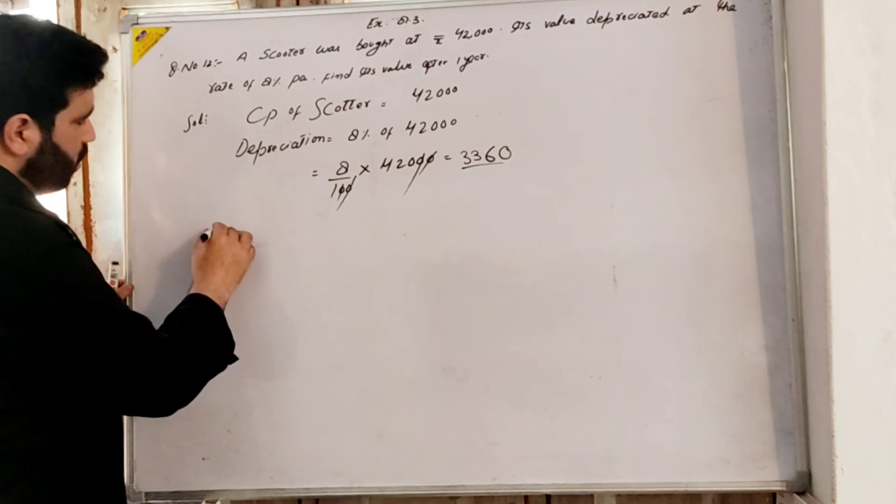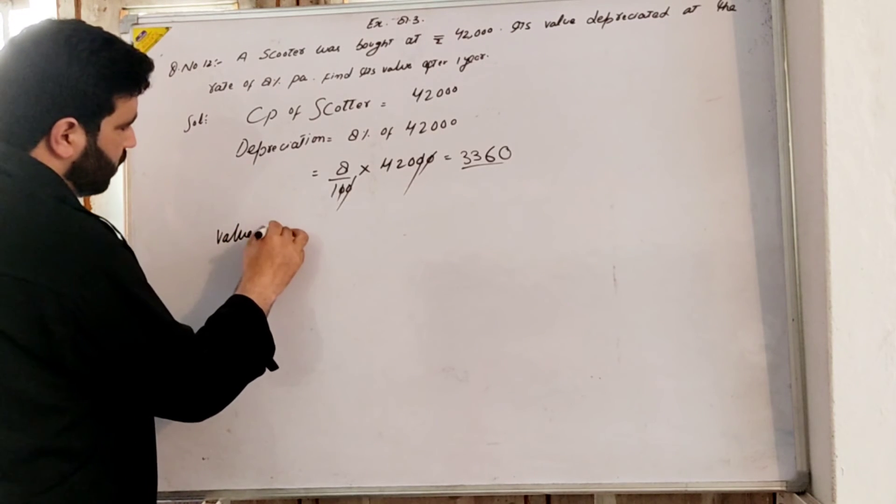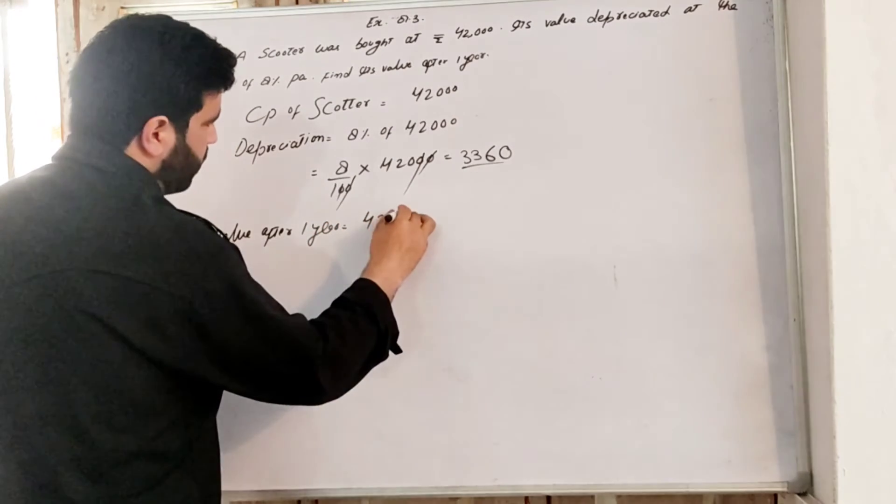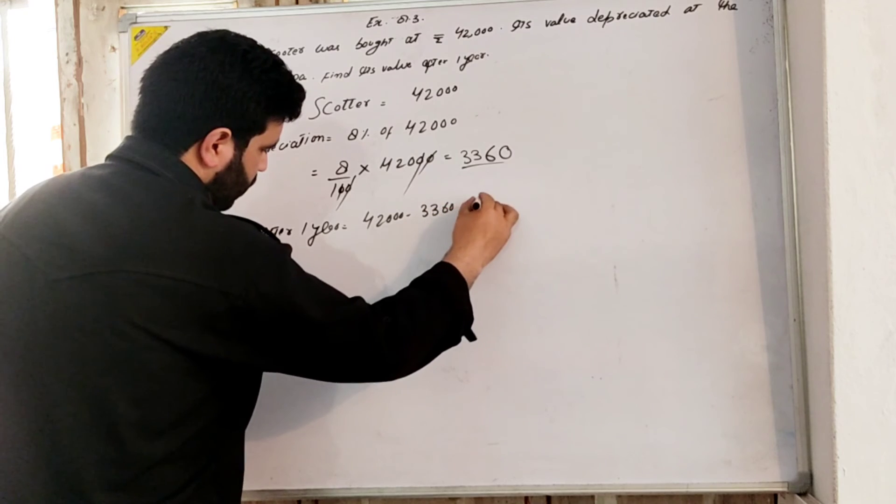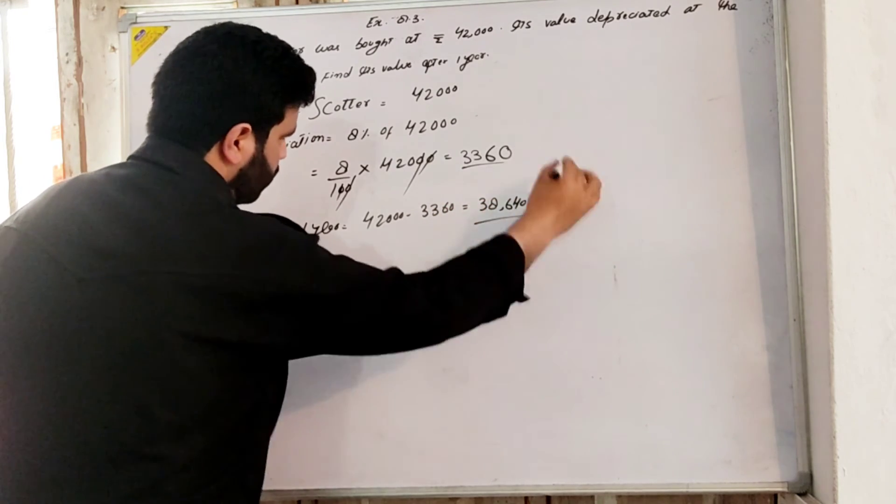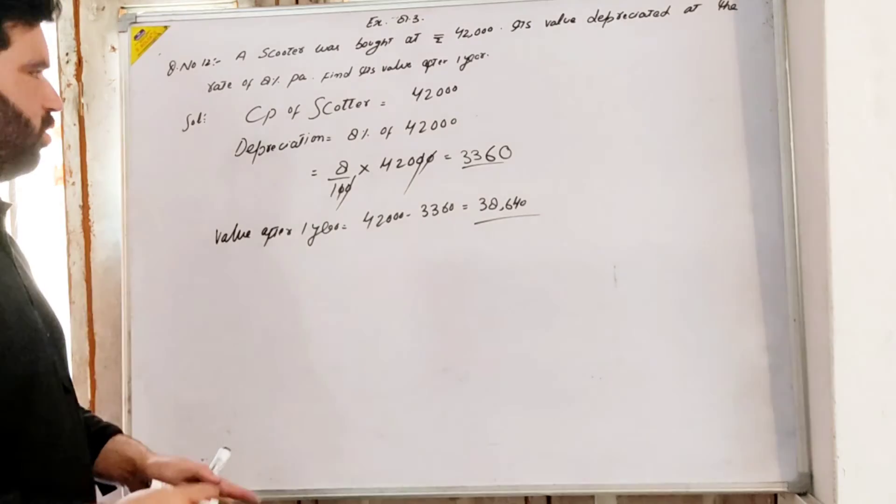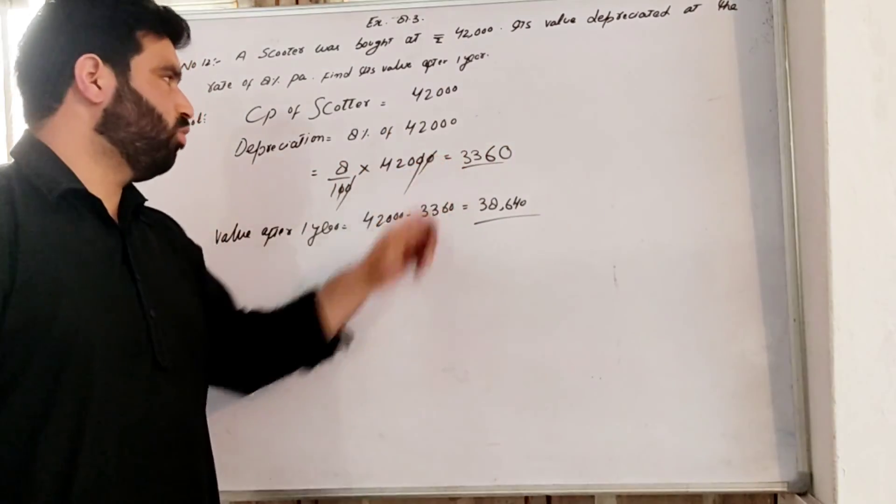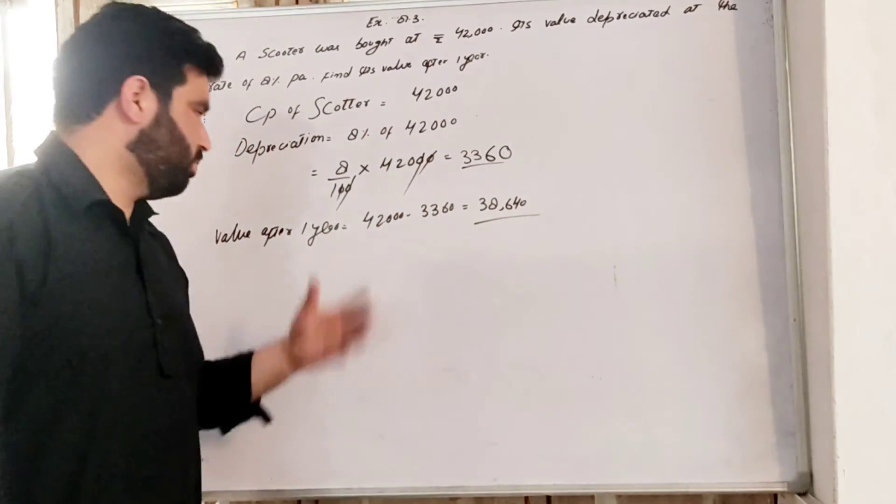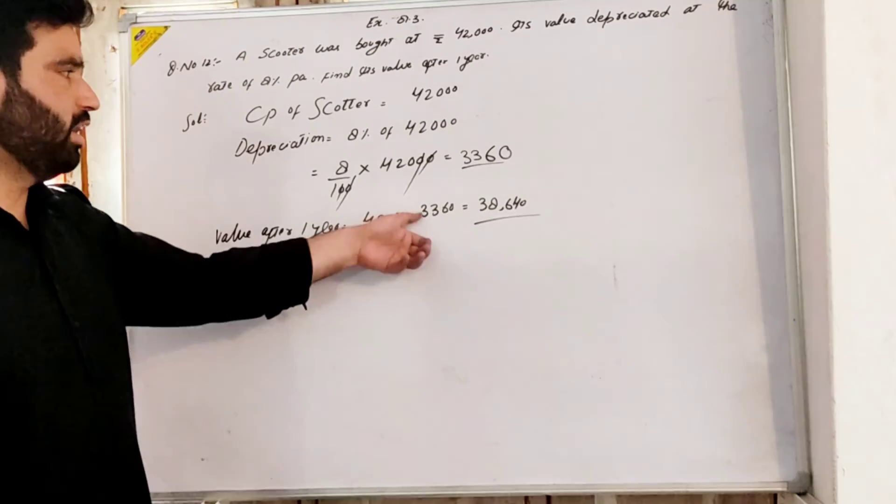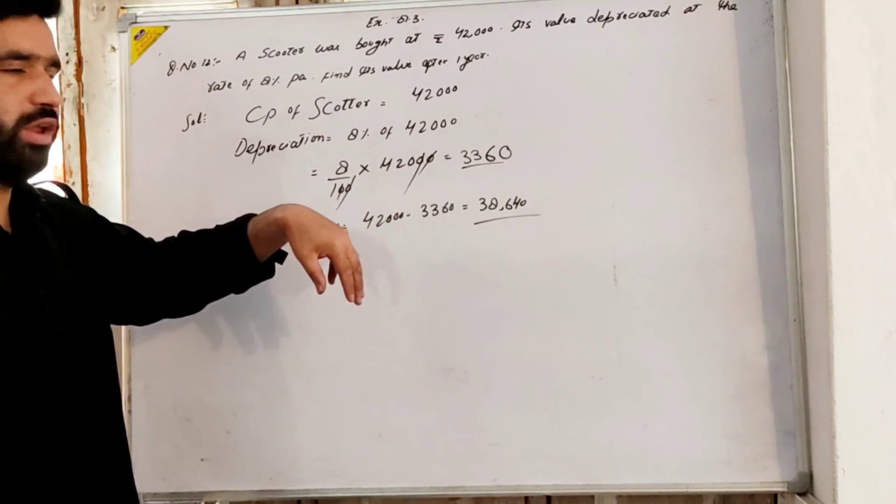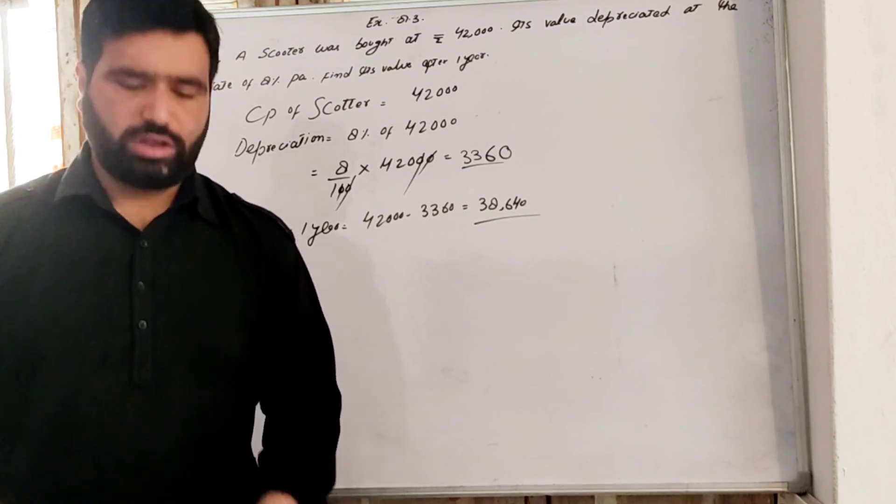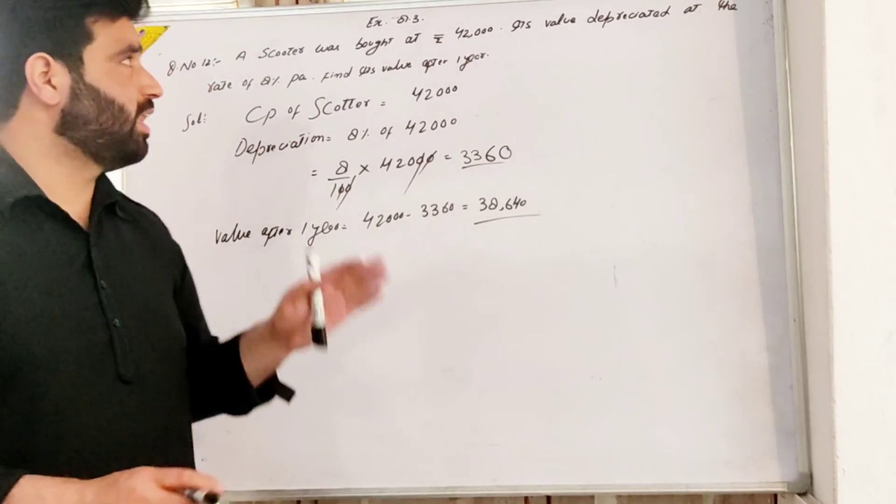Value after one year equals 42,000 minus 3,360, which is equal to 38,640. This is the answer. Using principle into rate into time, where time is one year, we get depreciation of 3,360. So the final value is 38,640.